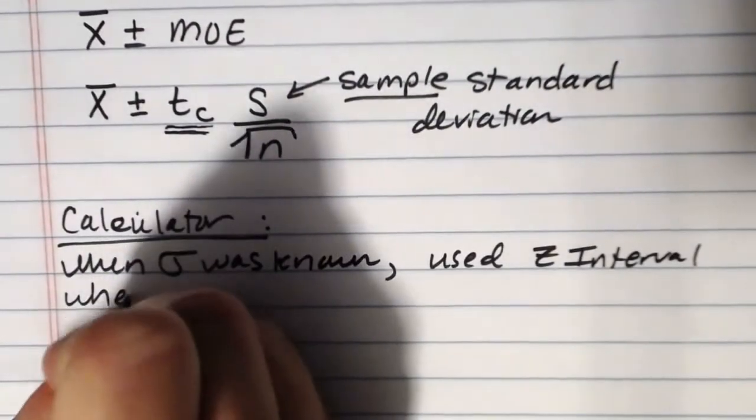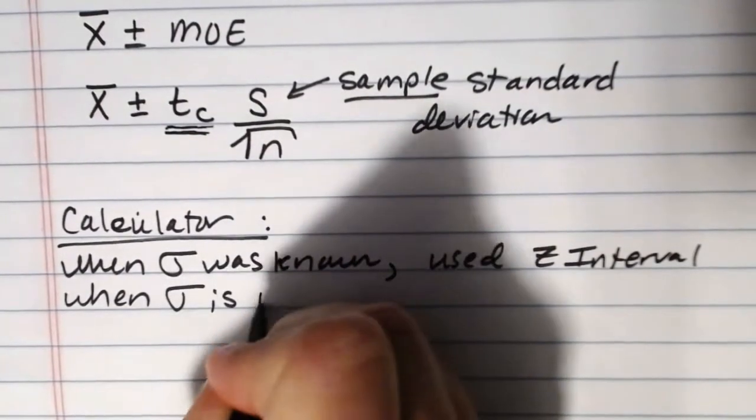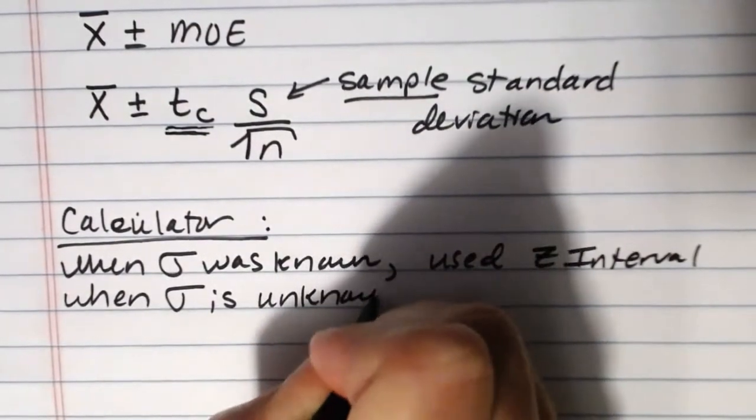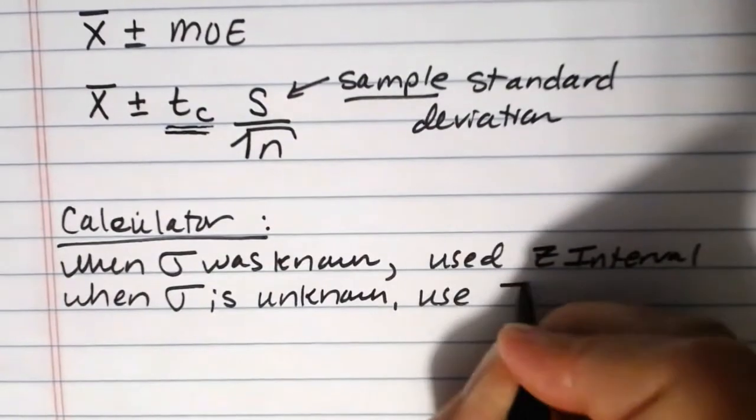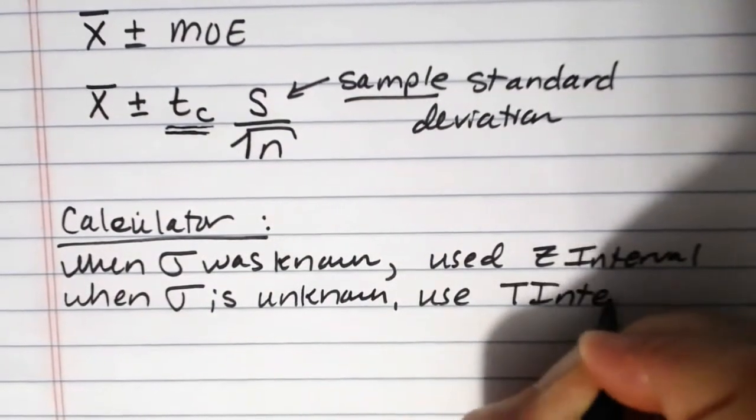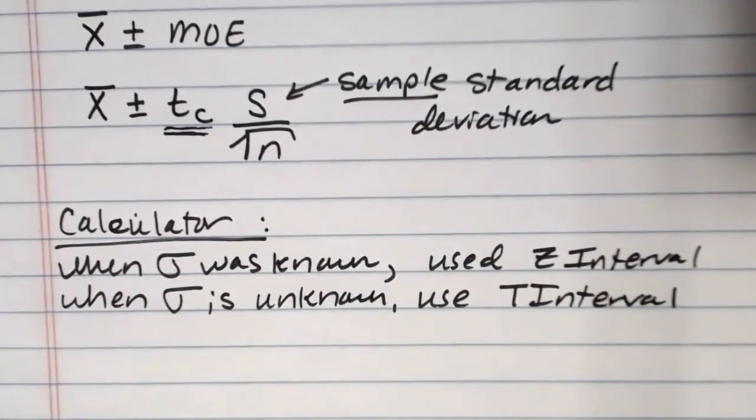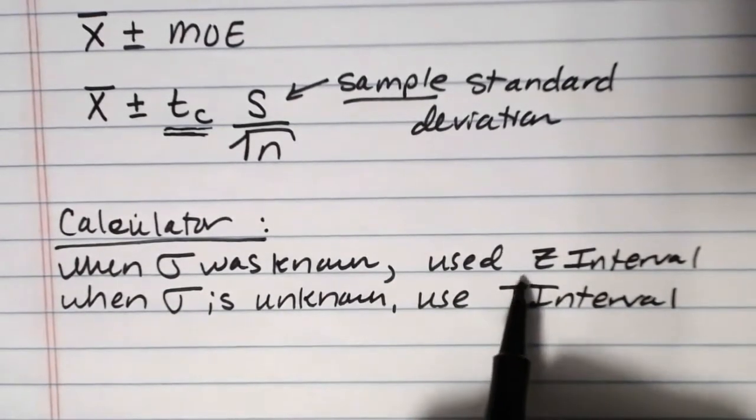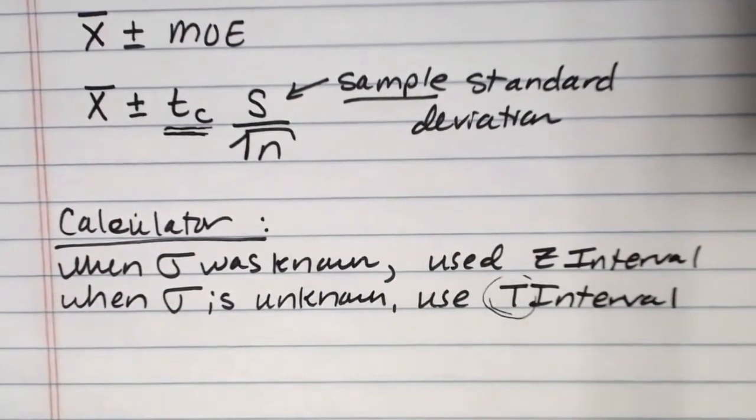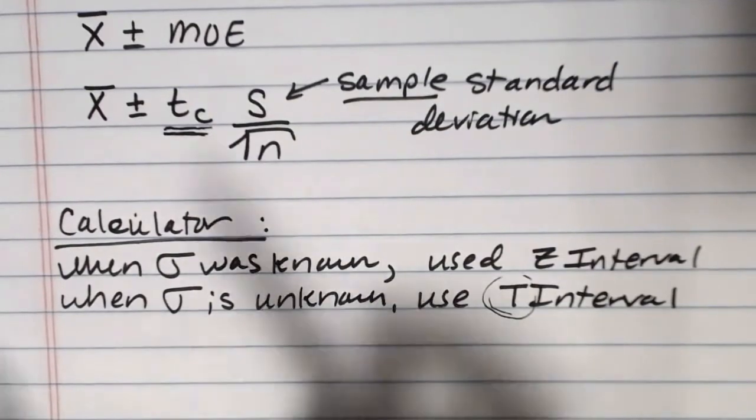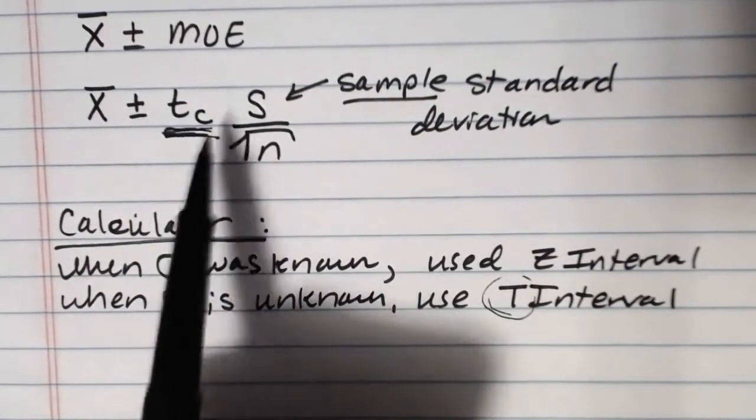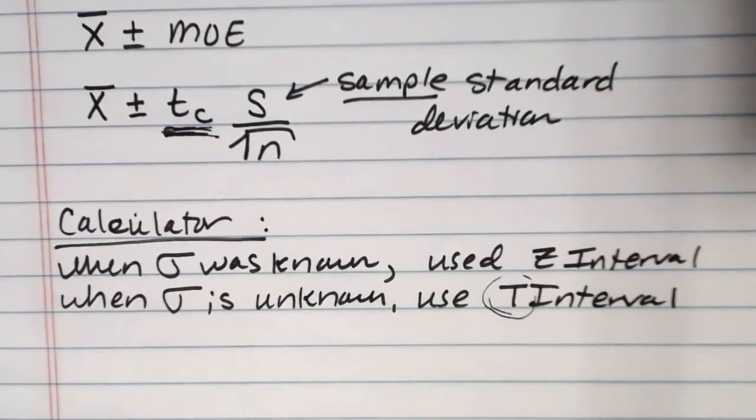And we use the z because when sigma was known this was all based on a normal distribution. Now that sigma is unknown, we'll use what's called the t interval. So that is for calculating mu when sigma is unknown. And again the calculator knows if you select the t interval that this is going to be based on the t distribution. And so you don't have to look this up by hand. It'll be programmed into the calculator program that it's going to be using.